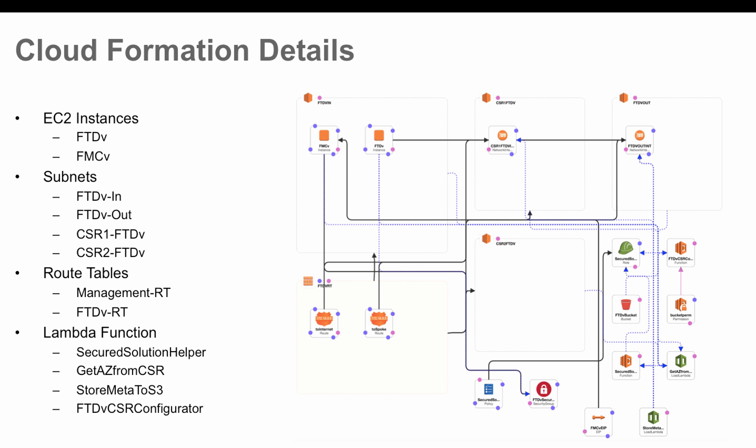The template will also create two route tables — one is the management route table and the other is the FTDv route table — and associate them with the correct subnets while adding the routes. The Cloud Formation will also create a Lambda function with four main functions: get the AZ from CSR, create subnets based on AZ information (since the two CSRs are in different AZs, subnets must match the correct AZ), store metadata to S3, and the FTDv-CSR configurator. Source code is available on GitHub.